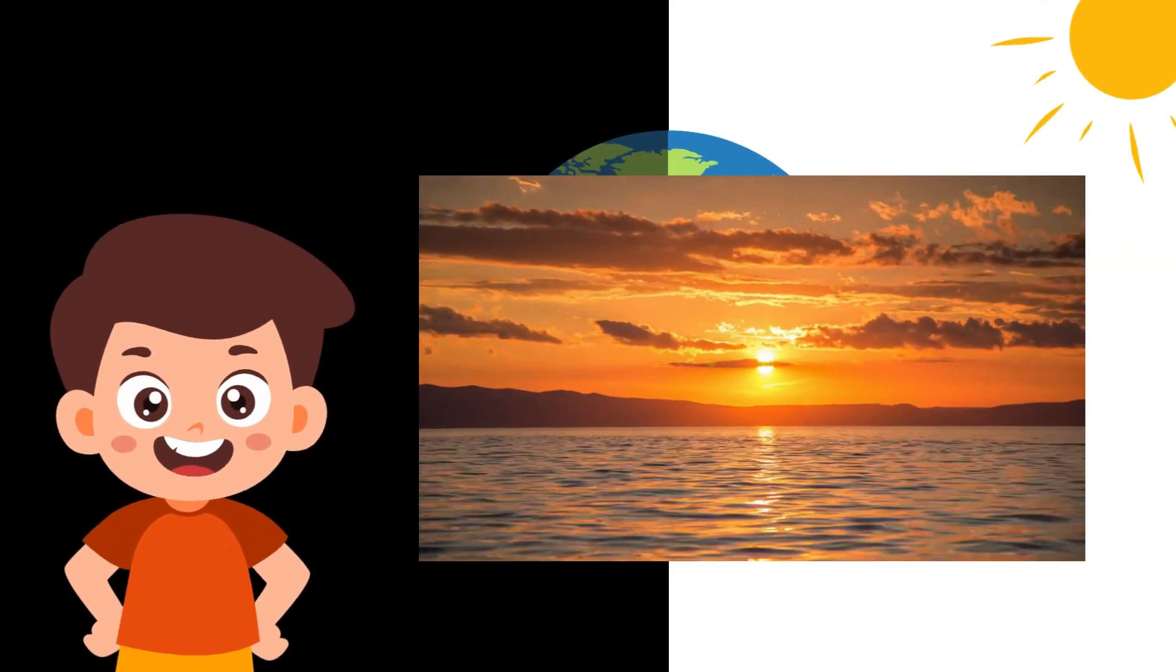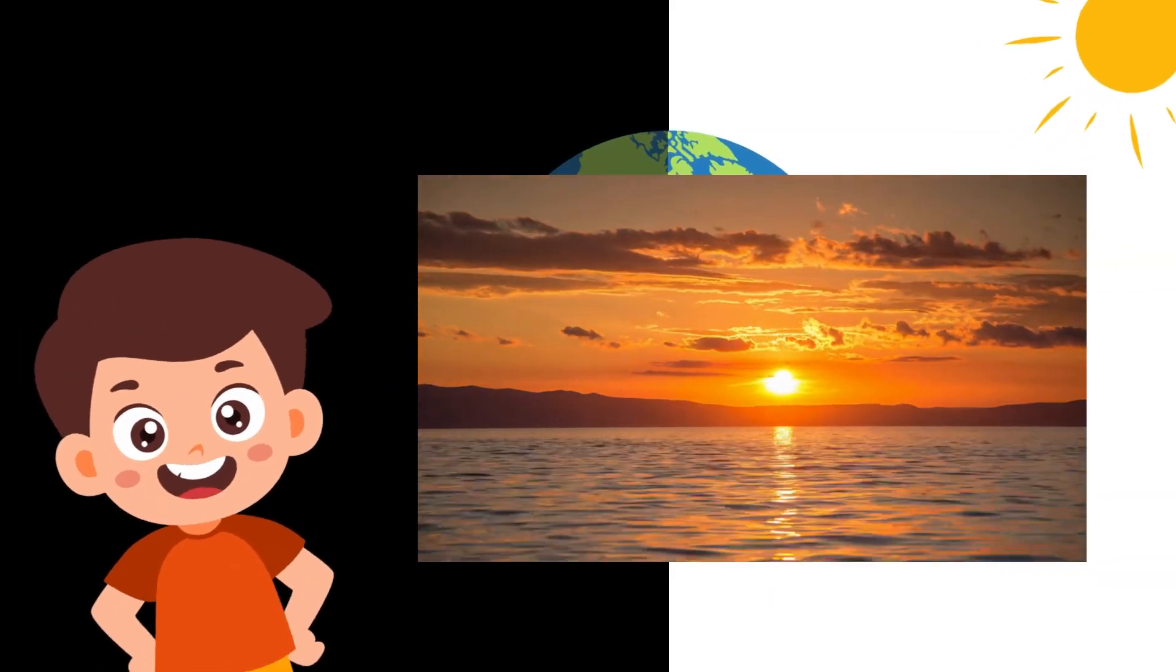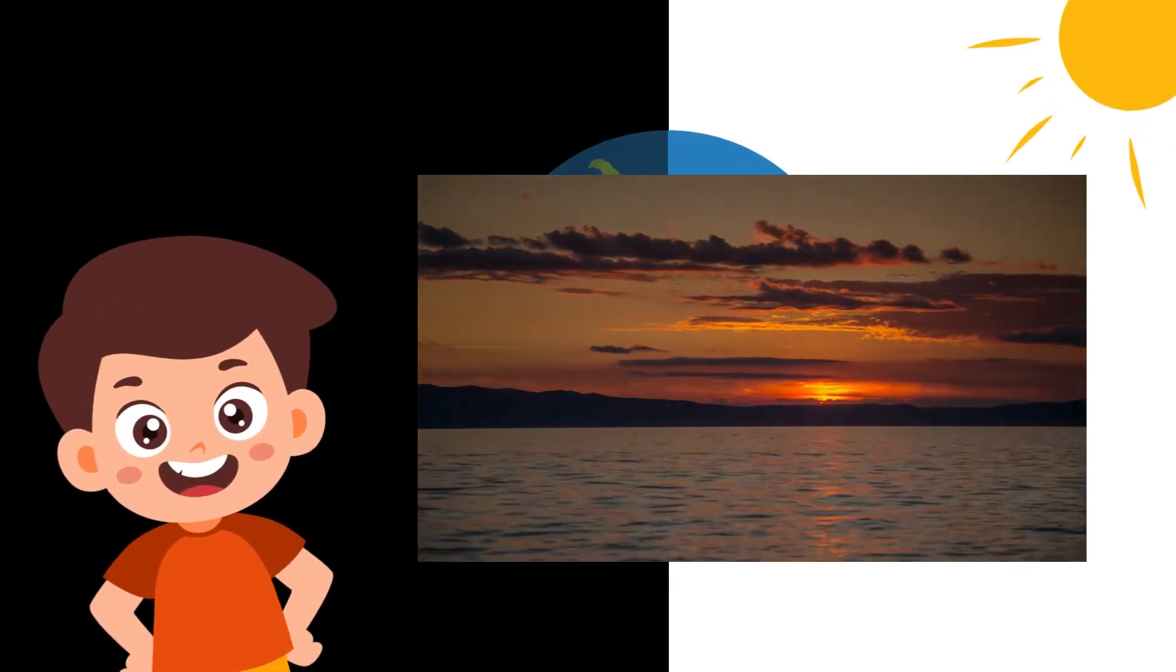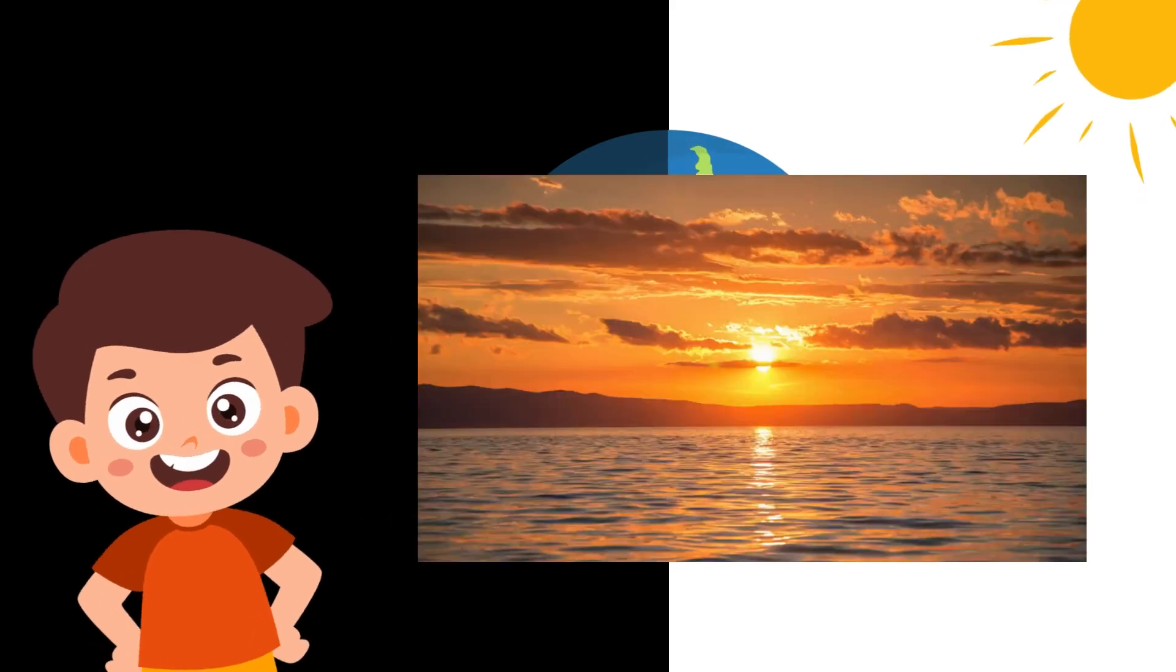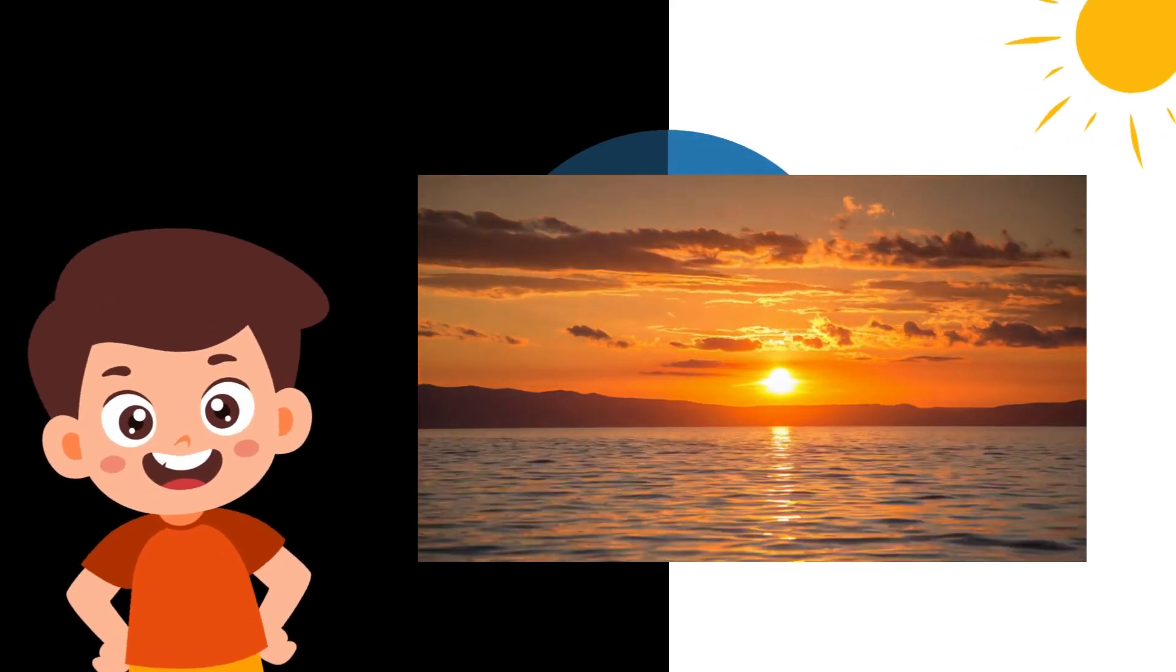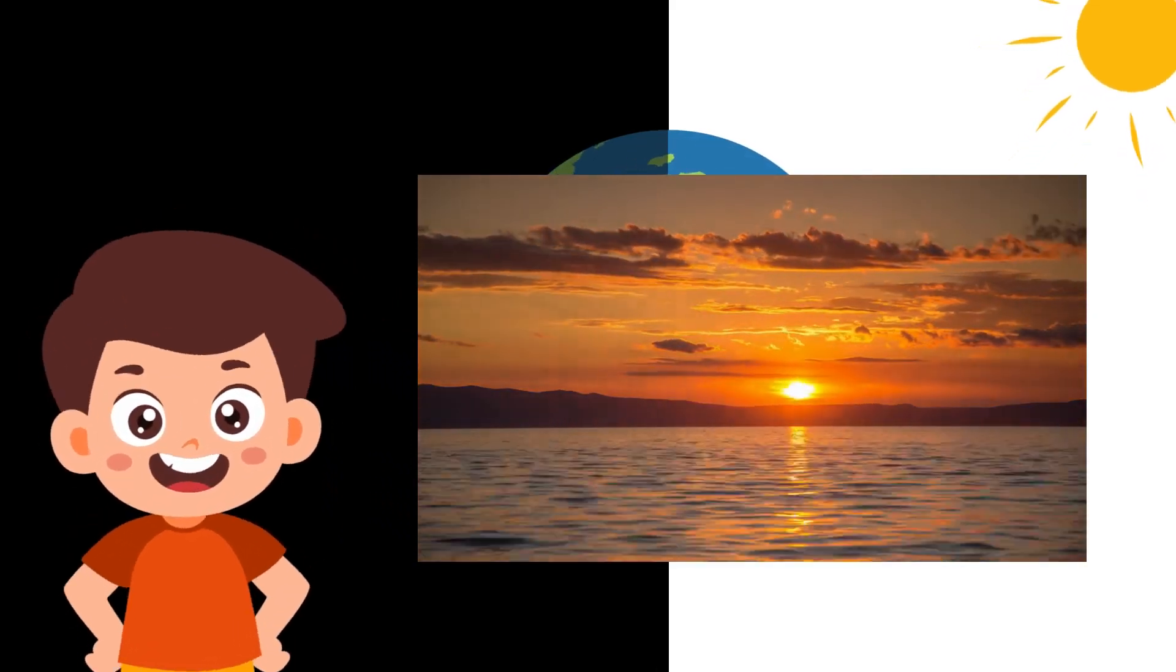Sunset and Dusk. Now, picture the Sun bidding a farewell, creating a beautiful display of colors in the sky. This is sunset. As your part of Earth turns away from the Sun, it enters a phase called dusk, where the sky transitions from day to night.